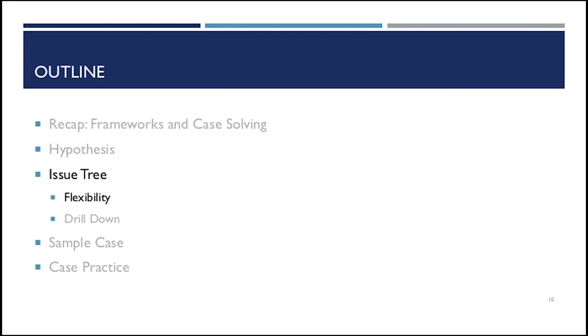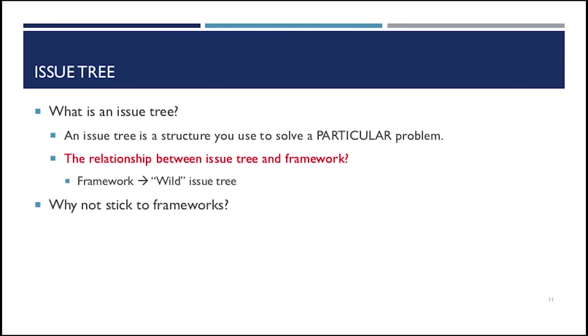Knowing about the hypothesis, next we would like to talk about the issue tree. So what is an issue tree? An issue tree is actually a structure you use to solve a particular case. And we used to talk about frameworks. What's the relationship between frameworks and the issue tree? So framework is actually a wild issue tree. It is very generic and it can be used to solve a lot of problems.